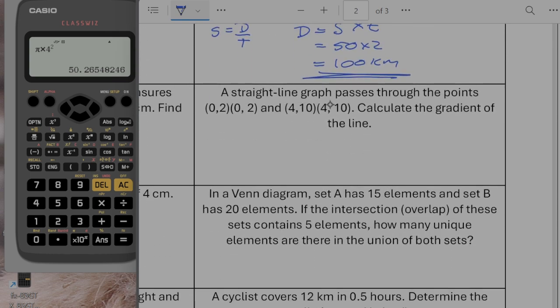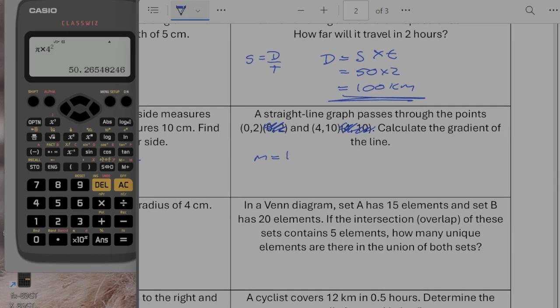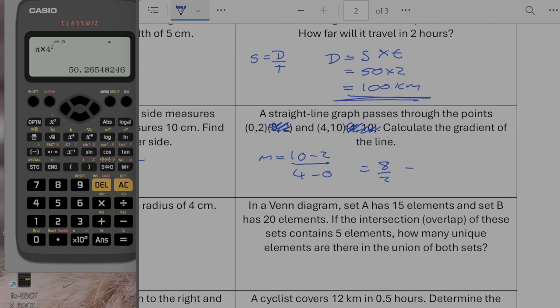Right, a straight line passes through the point. So we've got several points. Calculate the gradient of the line. So we've got coordinates written twice. That's an issue with my putting the questions together. I'll change that before it goes out though. So the gradient is going to be the change in y. So 10 minus 2 over the change in x. So 4 minus 0. So that's going to give me 8 over 2, which is going to give me a gradient of 4.